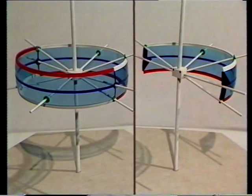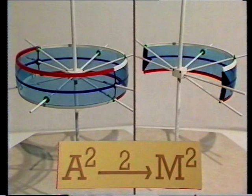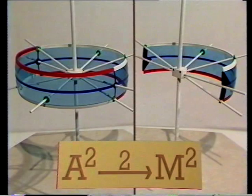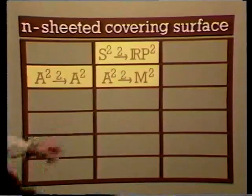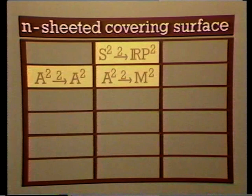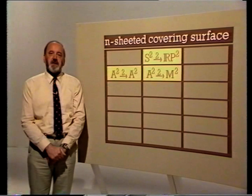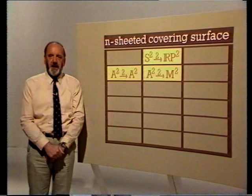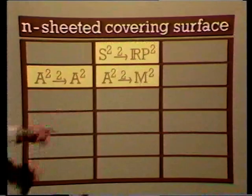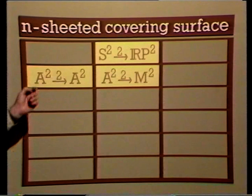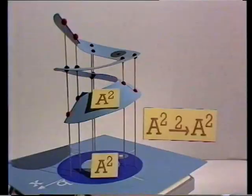If we go back and consider the intact cylinder as an ordinary cylinder without identifications, then we have a cylinder, or annulus A2, which we can think of as a two-sheeted covering surface for the Möbius band, because the rays through the cylinder define a two-to-one local homeomorphism onto the Möbius band. So we've now seen three examples of covering surfaces, all of which are two-fold covers, n equals 2. The question we aim to answer by the end of the program is: what surfaces can be covering surfaces of what other surfaces? To lead up to that, let's look at some more examples and see a method of getting new examples with other surfaces and other values of n.